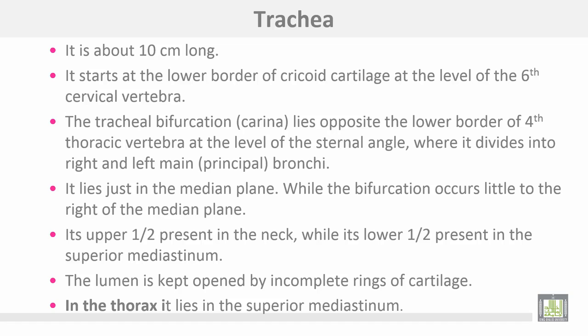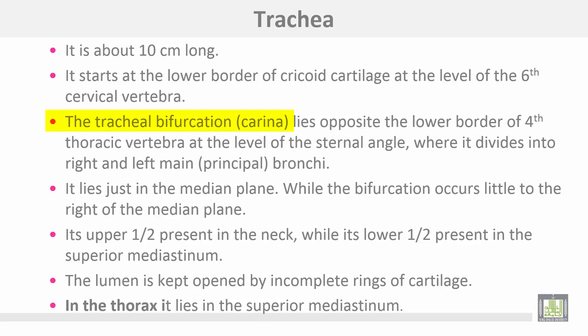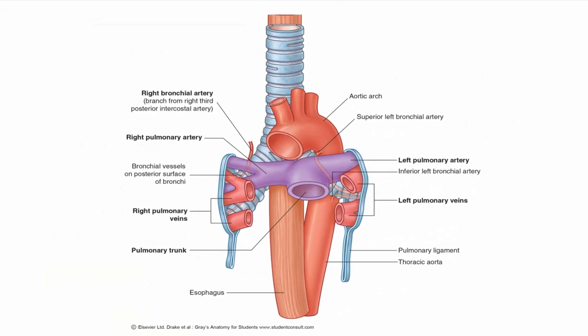The trachea is about 10 centimeters long. It starts at the lower border of the cricoid cartilage at the level of the sixth cervical vertebra. The tracheal bifurcation is called the carina. It lies opposite the lower border of the fourth thoracic vertebra at the level of the sternal angle, where it divides into right and left main principal bronchi. It lies in the median plane, while the bifurcation occurs a little to the right of the median plane. The upper half of the trachea is present in the neck, while the lower half is present in the superior mediastinum. The lumen is kept open by incomplete tracheal rings. This figure shows the trachea in the superior mediastinum.